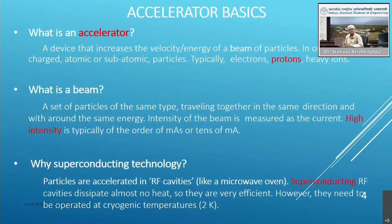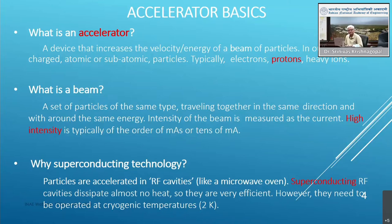An accelerator is a device that increases the velocity or energy of a beam of charged atomic or subatomic particles — typically electrons, protons, or heavy ions. A beam is a set of particles of the same type traveling together in the same direction with roughly the same energy. The intensity of the beam is measured in current, since a moving charged particle constitutes a current. For high-intensity accelerators, we are talking about currents of milliamperes or tens of milliamperes.